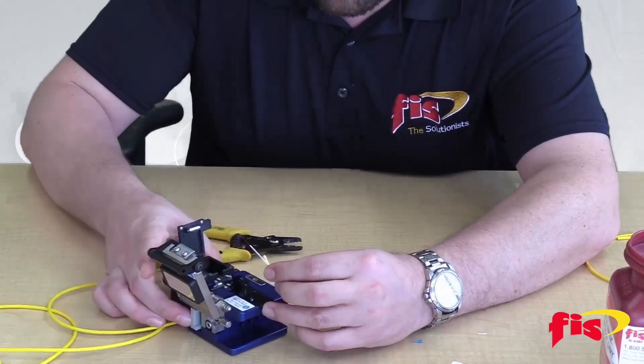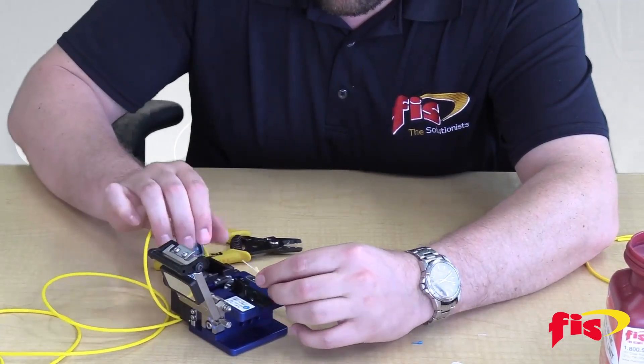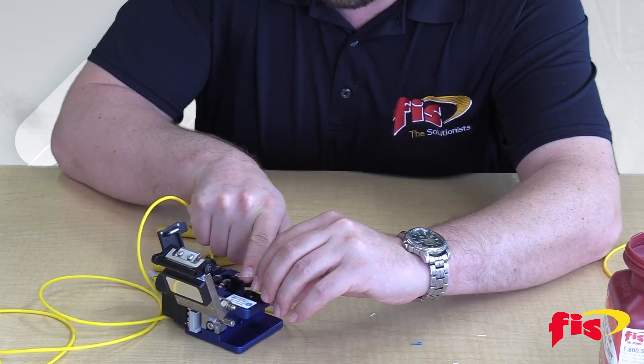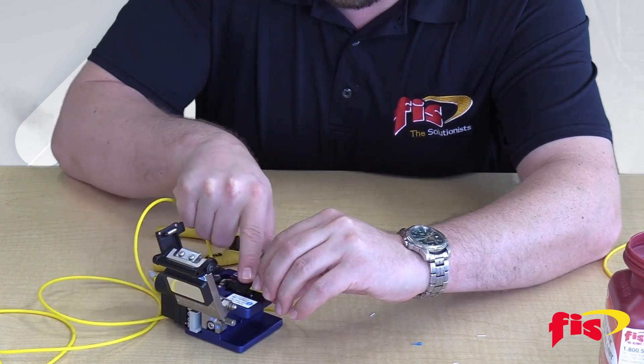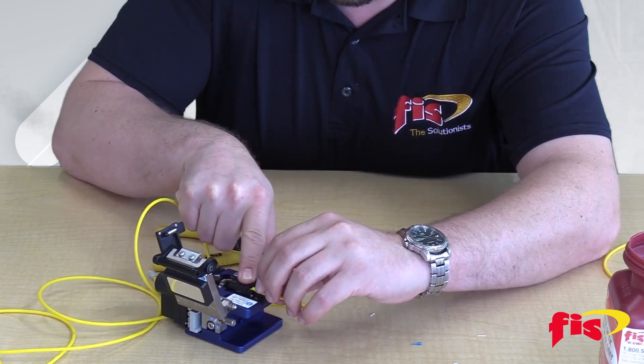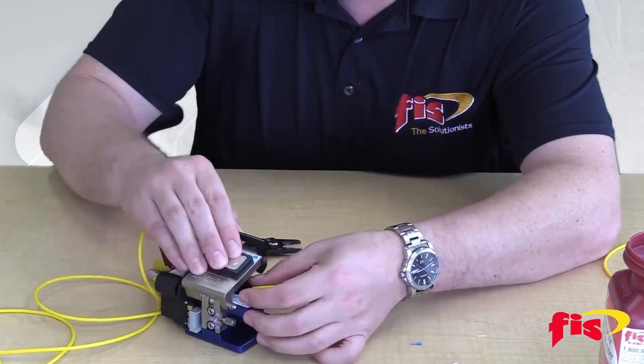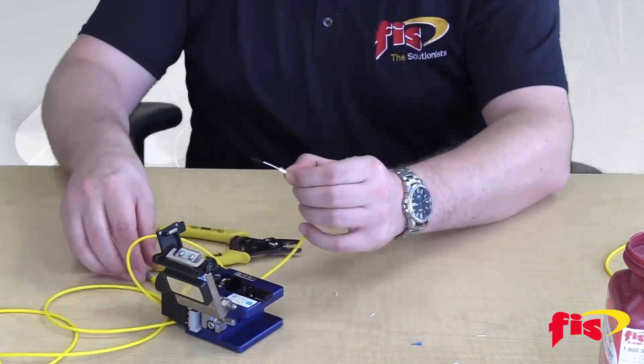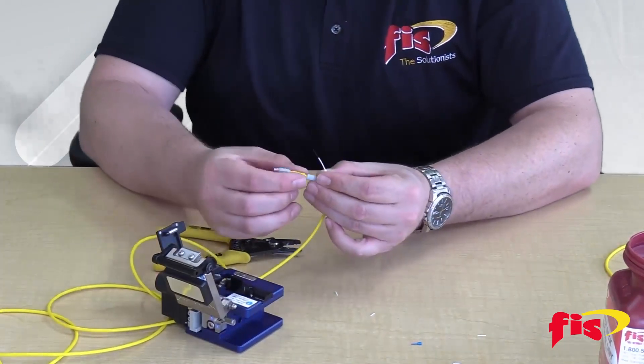Then perform a seven millimeter cleave on your fiber. Once the fiber is cleaved, you're now ready to insert it into one end of the Ultra Splice capsule.